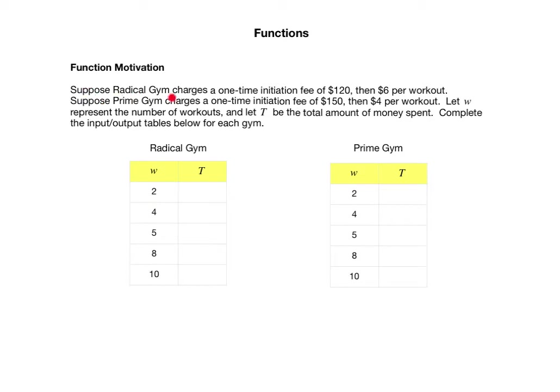Suppose Radical Gym charges a one-time initiation fee of $120, then $6 per workout. Suppose Prime Gym charges a one-time initiation fee of $150, then $4 per workout. Let W represent the number of workouts and let T be the total amount of money spent. Complete the input-output tables below for each gym.